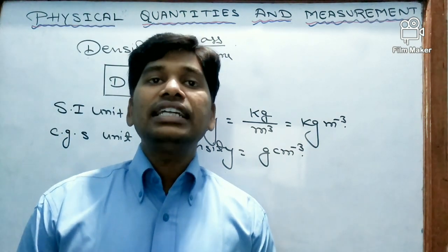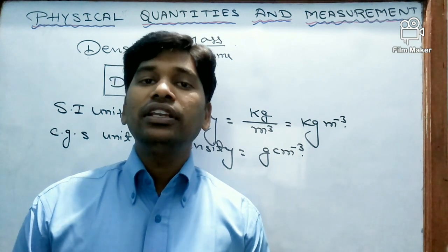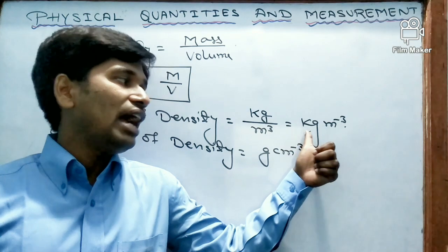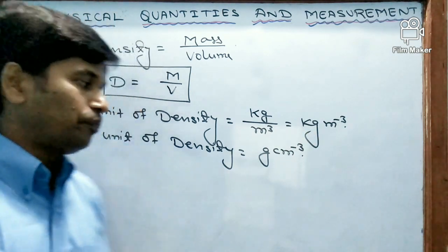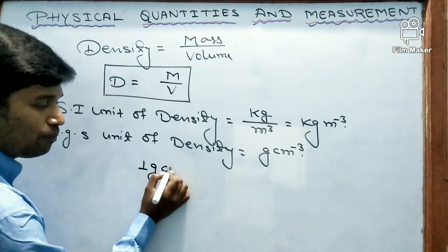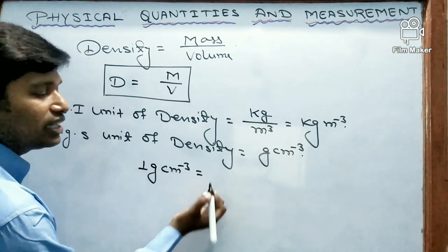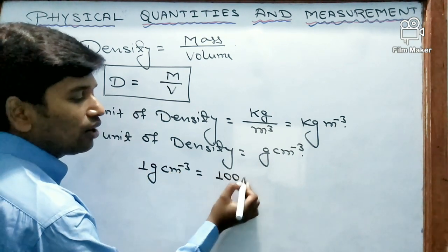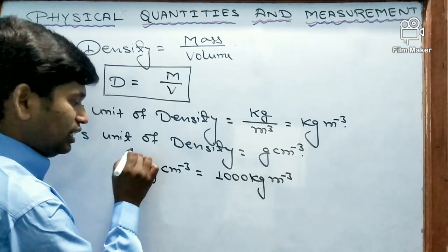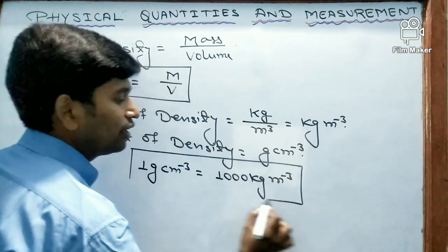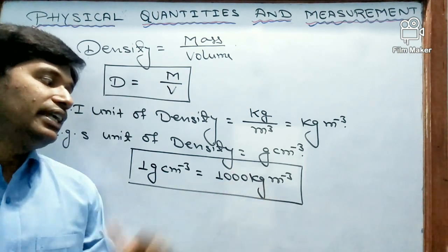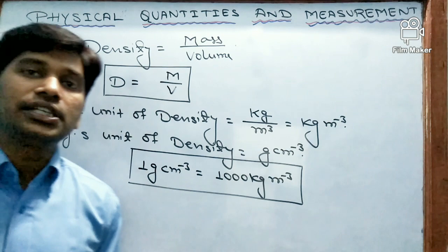Now let us write the relationship between gram per centimeter cube and kg per meter cube. One gram per centimeter cube is equal to 1000 kg per meter cube. This is the relationship between the CGS unit and SI unit of density.